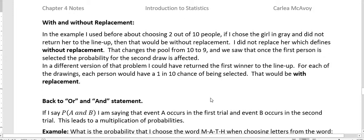In a different version of that problem, I could have returned the first one into the lineup. And then for each drawing, each person would have a one in 10 chance of being selected. That would be with replacement. So notice that the probability is changed whether you have with replacement or without replacement.